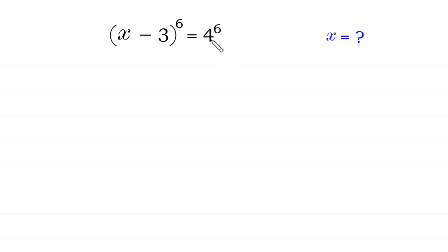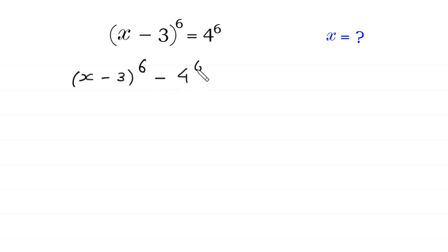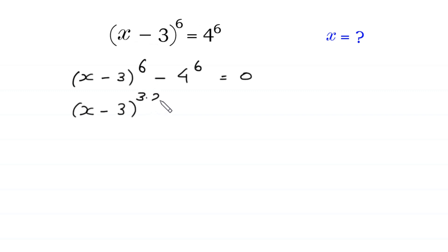First of all, we move this 4 to the power 6 to the left side: (x minus 3) whole to the power 6 minus 4 to the power 6 is equal to 0. Next, we can write this exponent 6 as 3 times 2, so we have (x minus 3) to the power 3×2 minus 4 to the power 3×2 is equal to 0.